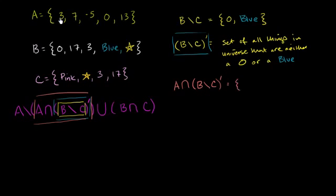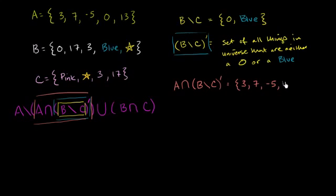The number 3 is in set A, and it's in the set of all things that are neither a 0 nor blue, so we include 3. The number 7 is in A and meets the constraint, so we include 7. Negative 5 also meets that constraint. A 0 is in A, but it is not in the set of all things neither a 0 nor blue — because it is a 0 — so we don't include it. And 13 is in A and meets the constraint. So this whole expression simplifies to the set {3, 7, -5, 13}.